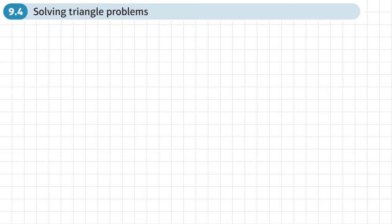This is the fourth section of chapter nine on trigonometric ratios, and this section is about solving triangle problems.